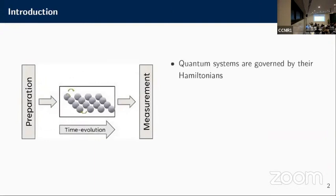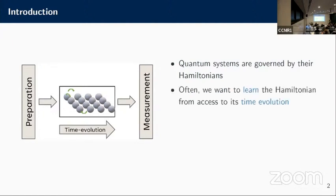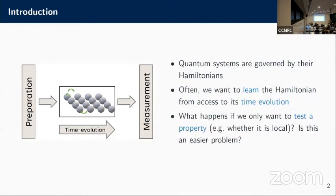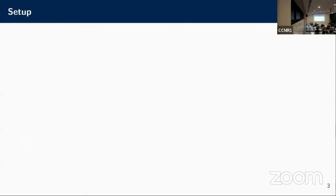So what are we trying to do? We're in a similar setting as the talks before. We all know that quantum systems are governed by Hamiltonians, and sometimes we want to learn them from access to the time evolution. As Tim presented, usually you have a preparation and a quantum system that you want to learn. You control its time evolution by switching it on and off at a convenient time, and then you measure something. But what happens if we actually don't want to learn the quantum system? Maybe we only care about one single property, for example, whether the system is local or not. Of course, if we could learn it first, we could look at it and say it's local or it isn't. But maybe it's easier if you just want to know this property. So the question is, is this an easier problem or not? This talk will give the answer to that in some sense.